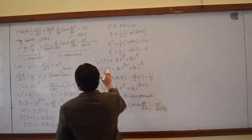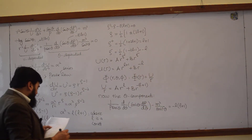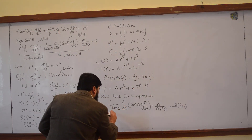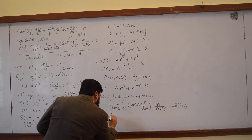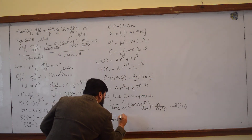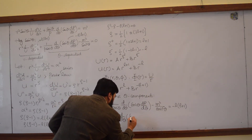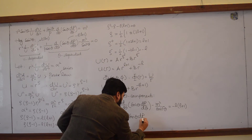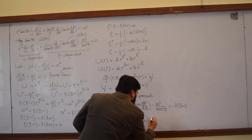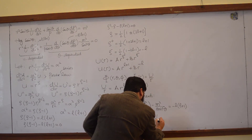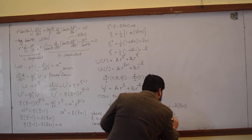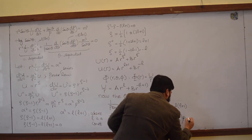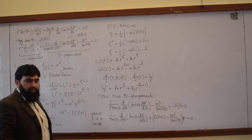Rearranging by multiplying through by P, the equation becomes: 1 over sine theta d by d theta of sine theta dP by d theta, plus l(l+1) minus m squared over sine squared theta, all multiplied by P, equals zero.